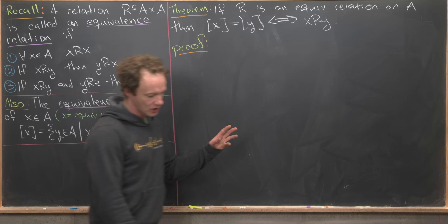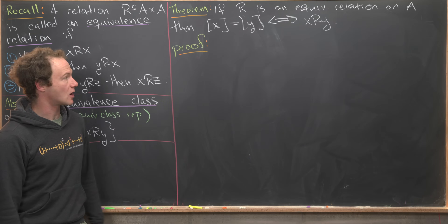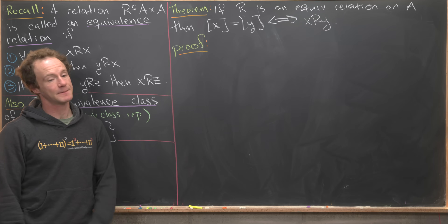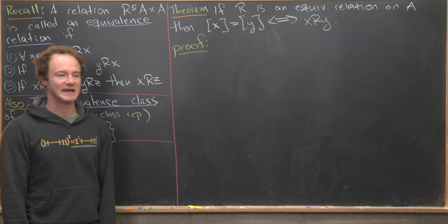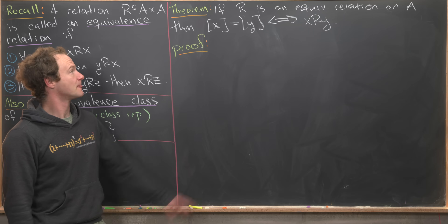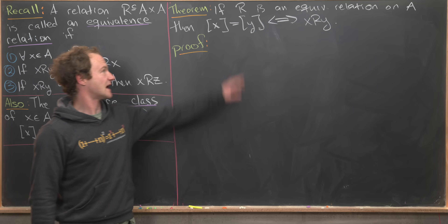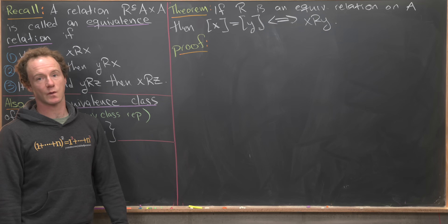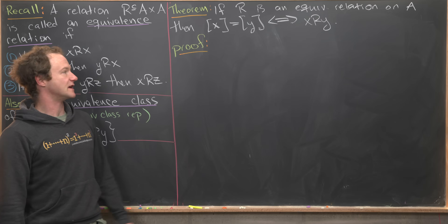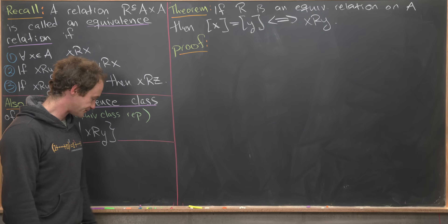We're going to start with a fairly general theorem: if R is an equivalence relation on A — A can be any set, R any equivalence relation — then the equivalence class of X equals the equivalence class of Y if and only if X is related to Y.